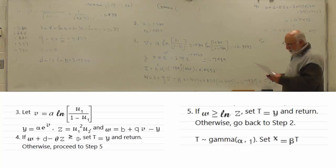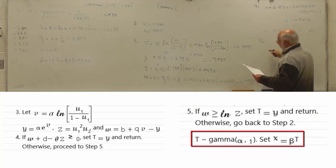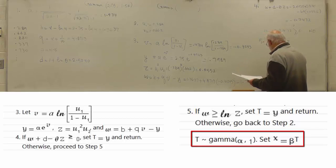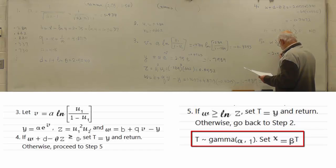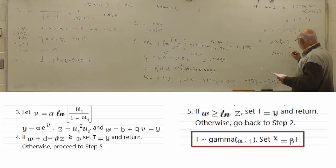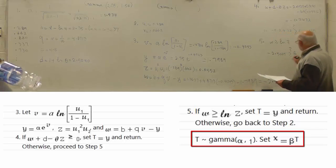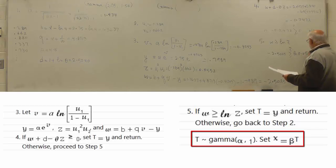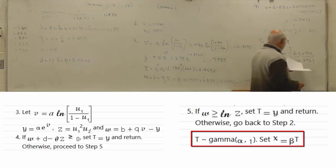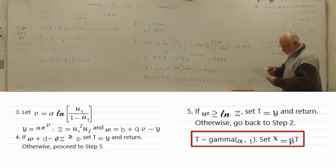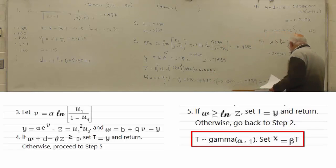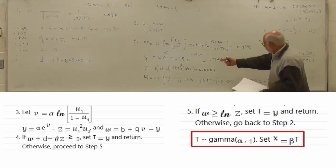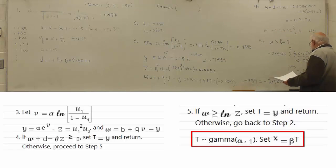In step 5 it says, is W greater than or equal ln of Z? W is negative 0.25. We want to know whether that is true. What is ln of Z? It is ln of 0.0552. Is this greater than that? And if the answer is yes, then set T equal Y. What is Y? It is 1.7989. Are we finished? No.